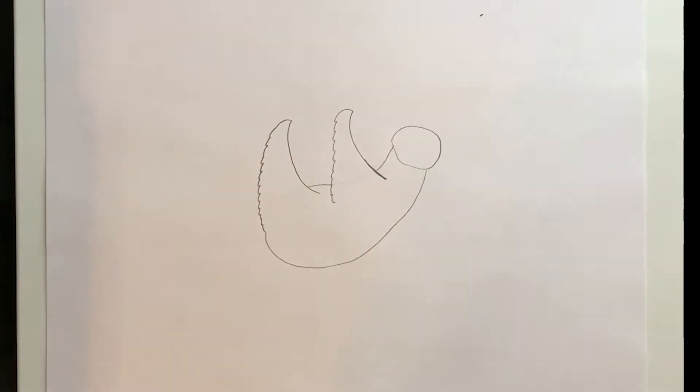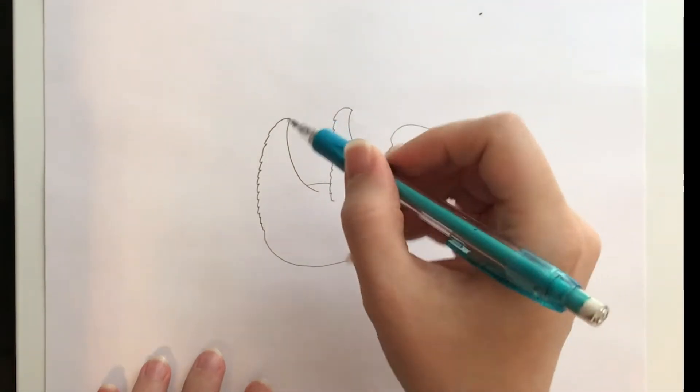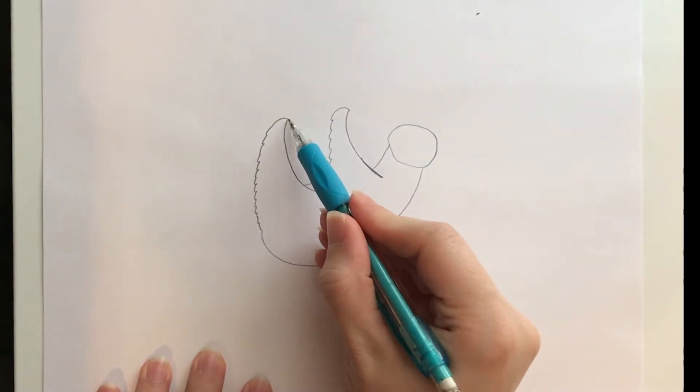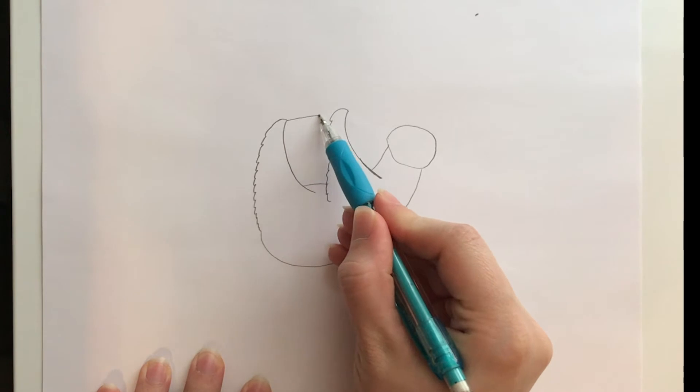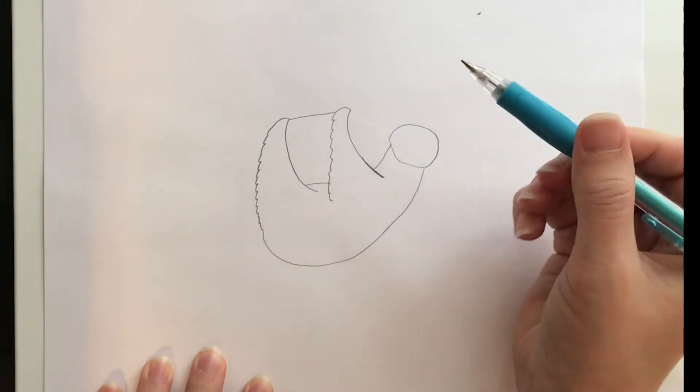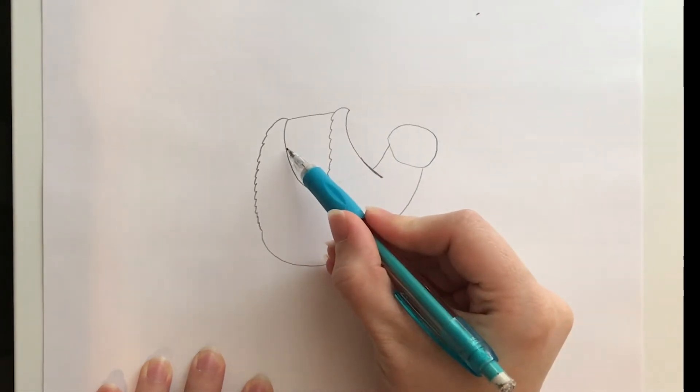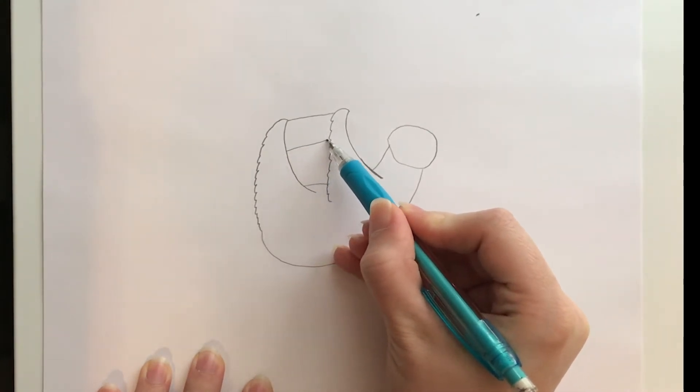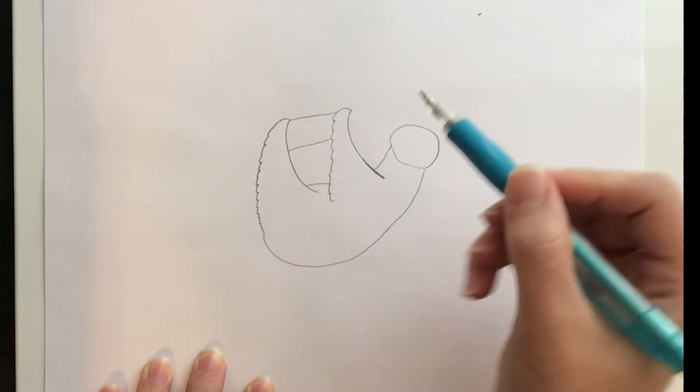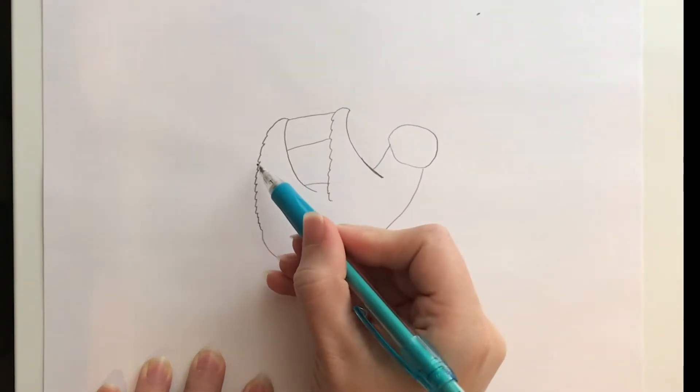Now I'm going to draw the tree branch that my sloth is hanging on to. I'm going to start by connecting those two paws because the sloth is holding on to the branch with both arms and legs. Then I'm going to make my tree branch pretty wide because it needs to look like it can actually hold up a sloth. If it's really tiny the sloth wouldn't hang on it because it wouldn't be secure.